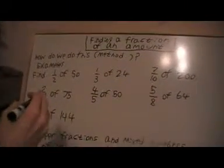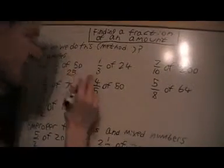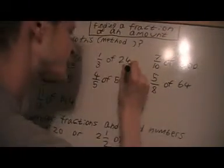So to find half of 50, I do 50 divided by 2, that's 25. To find one third of 24, I divide 24 by 3, that's 8.